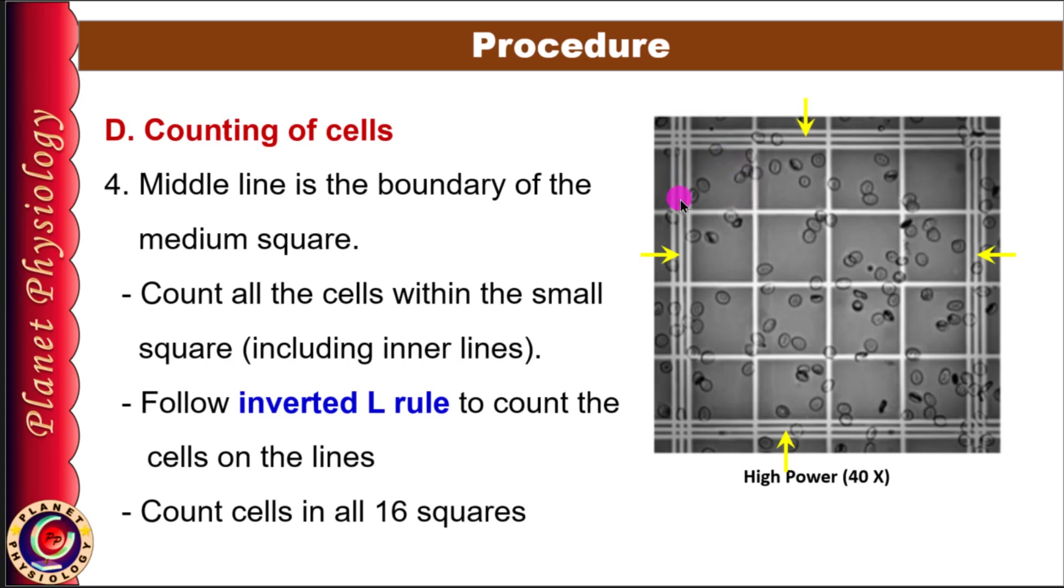Once you are in a corner square, start counting the cells in these 16 small squares. First observe the top left small square. Note that it has triple lines on its top and left side. Count all the cells within this square, including the cells on the inner lines. In this case there are 6 cells within the box. For the cells on the lines, follow inverted L rule. Observe top and left middle lines. If cells are present on these borders, add them to your count. Here there is only one cell on the left border and none on the top, so count for the first box is 7. Cells on the outermost line should not be counted. Some may consider the inverted L rule as right border and bottom border. It doesn't matter if you consider any two adjacent borders as long as you stick to the same pattern during the entire process.